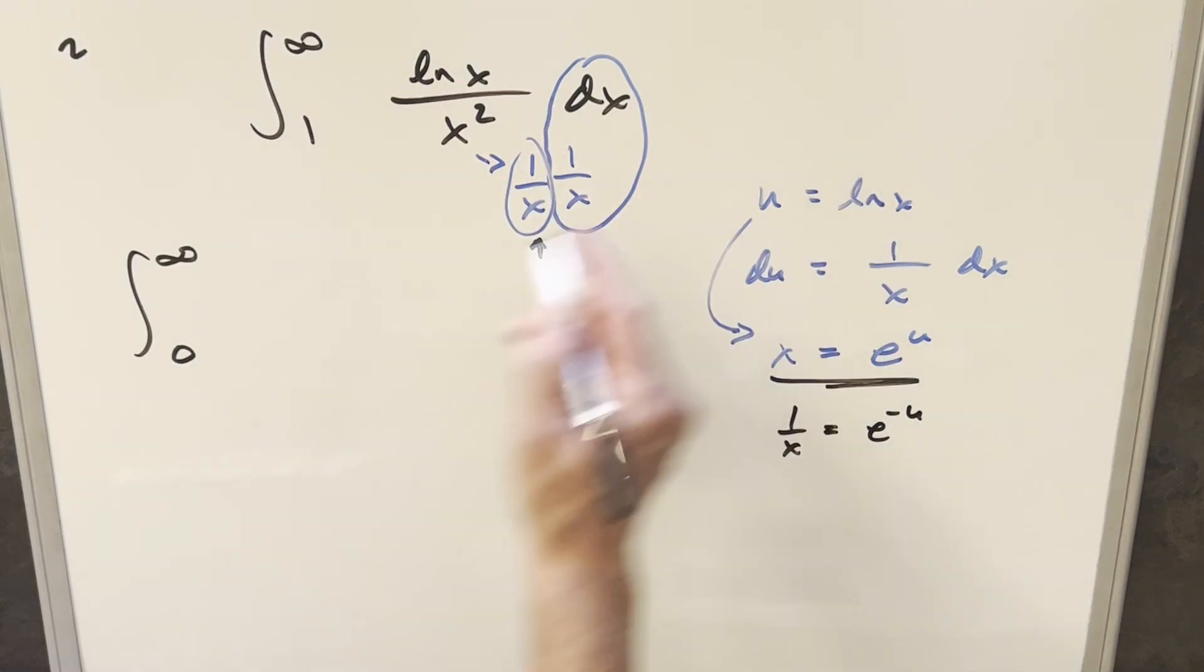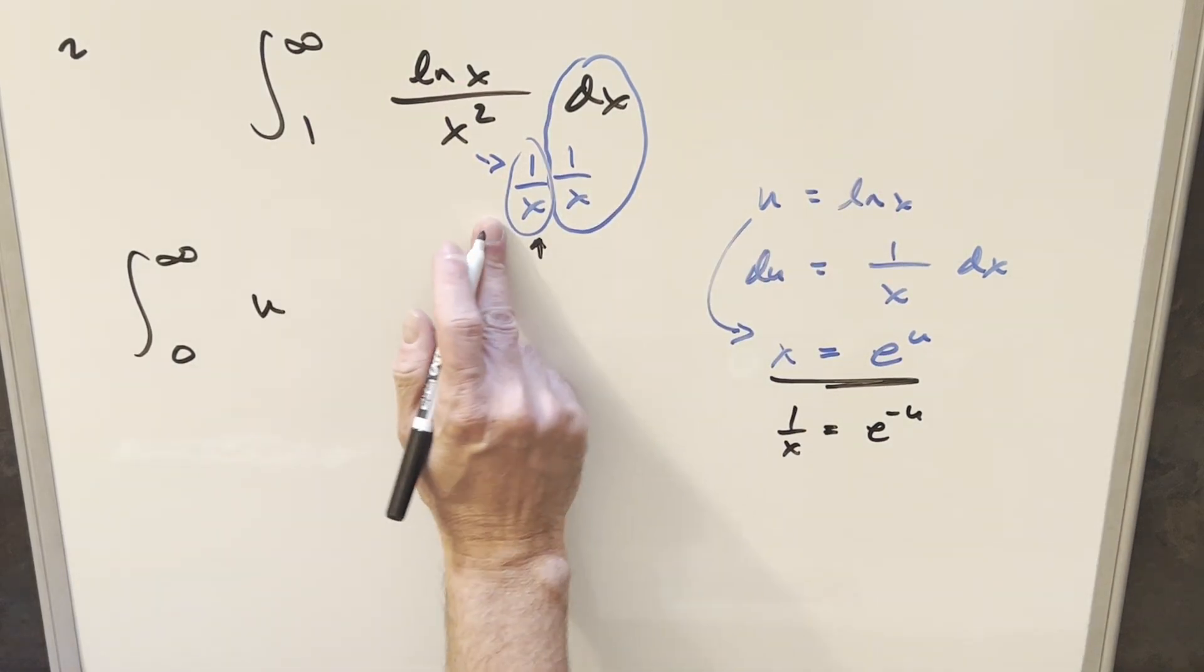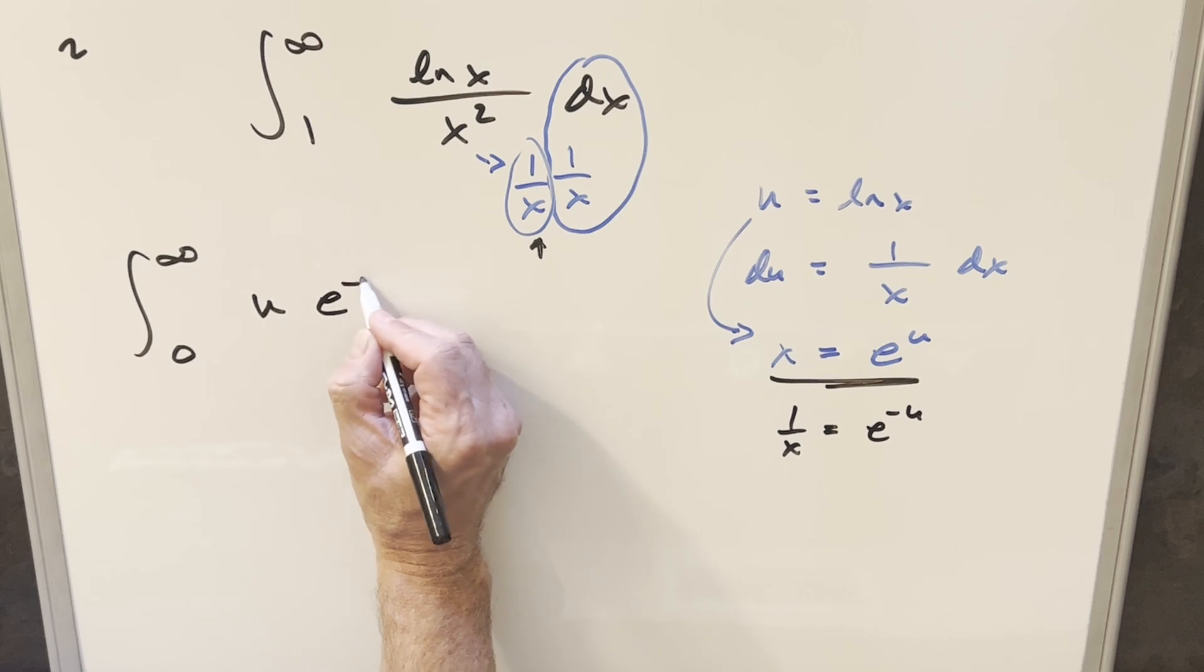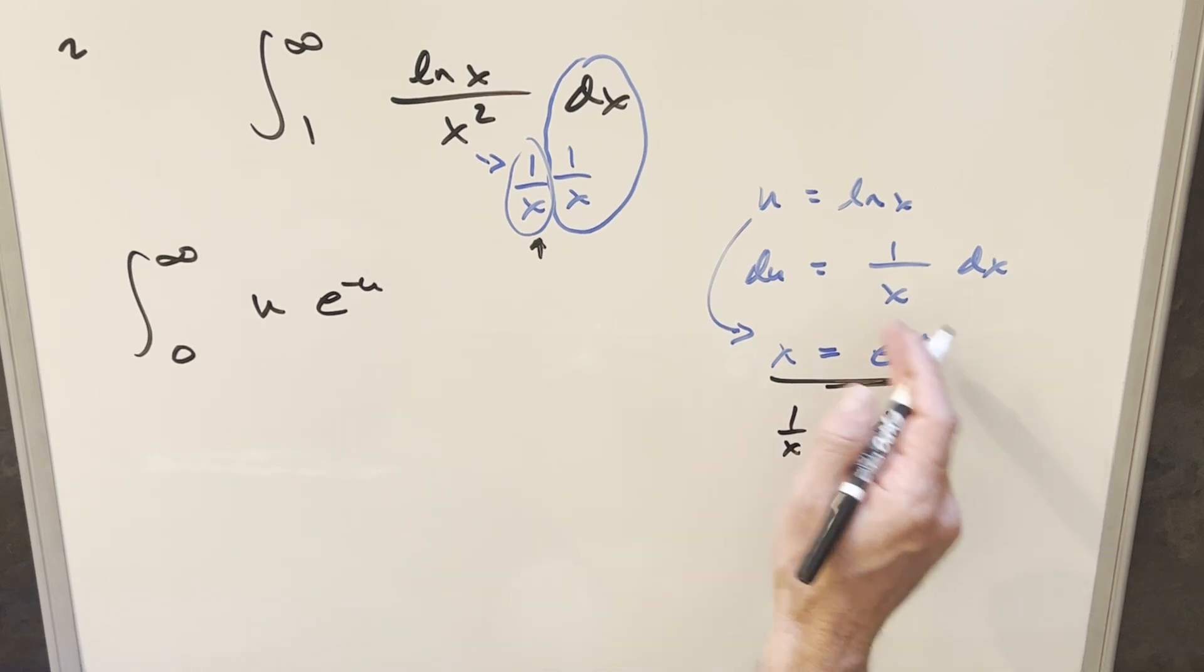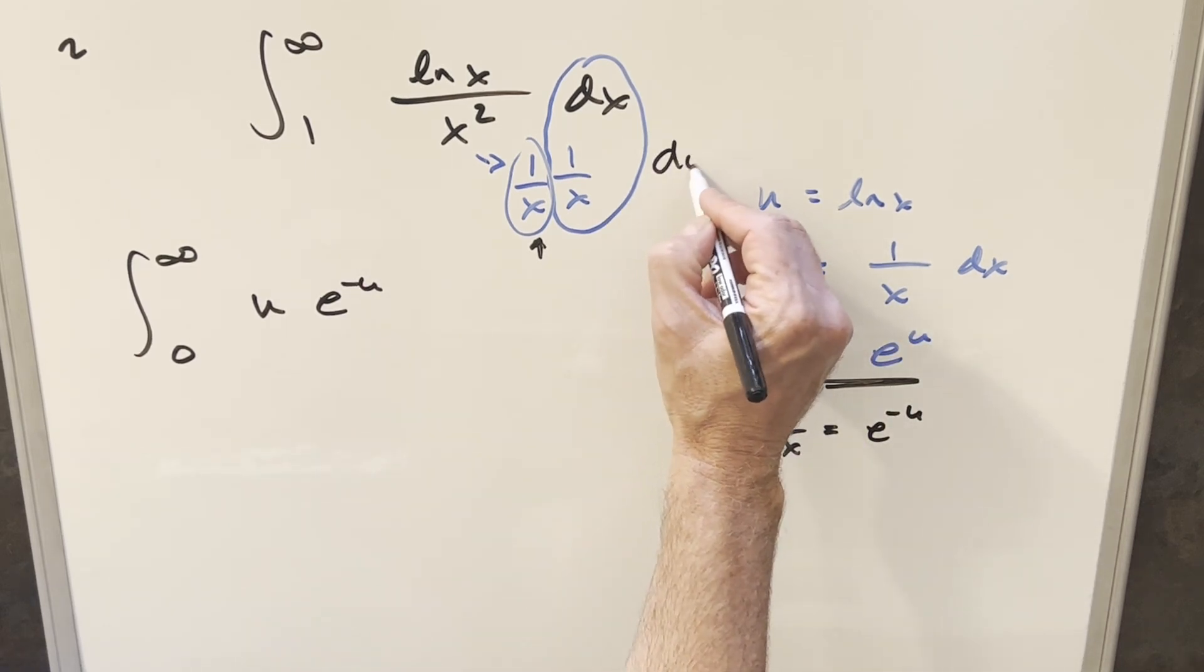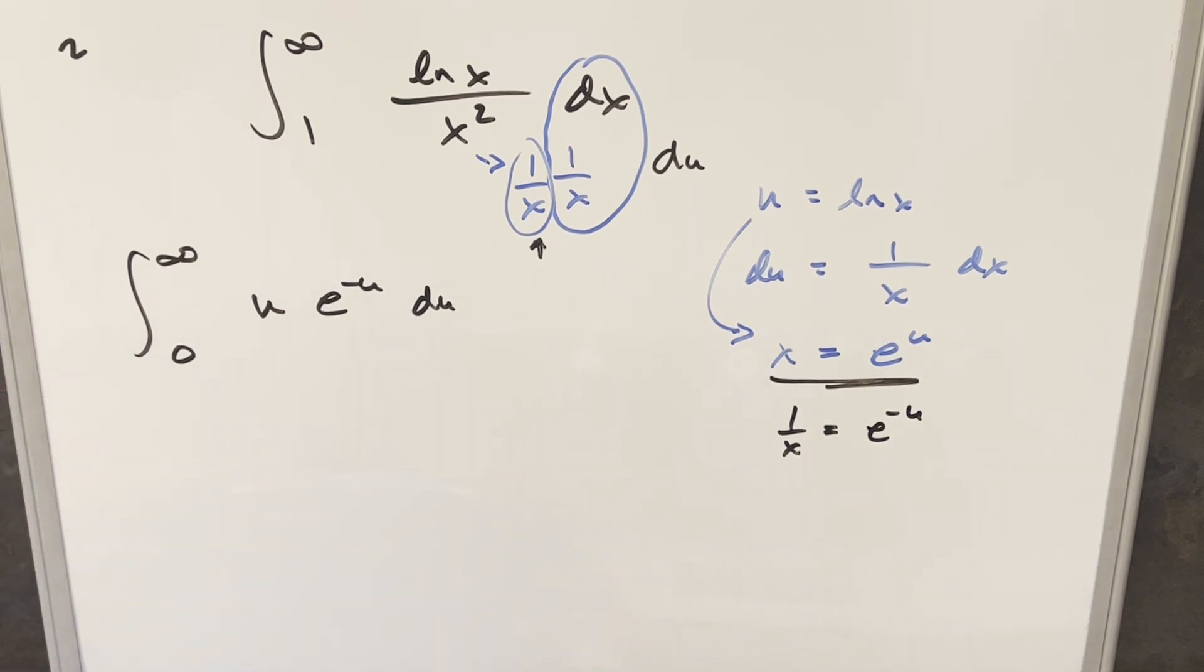So then here, natural log x is u. This 1 over x here is e to the minus u. And then all this over here is just our du. We could just do integration by parts on this and finish it off.